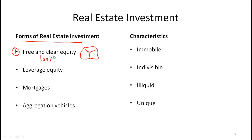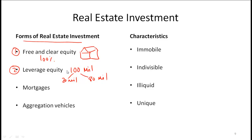So that is the simplest form. Number two is leveraged equity, where let's say a piece of property is worth 100 million and you might put in 20 million of your own and borrow 80 million. So this would be leveraged equity where you have purchased some form of real estate — let's say a huge office complex — and you have put in 20% of your own equity and borrowed 80 million. Hence, this is called leveraged equity.